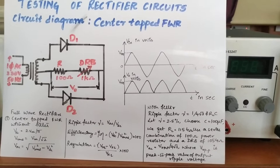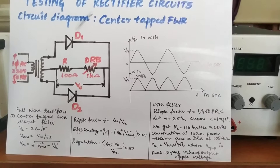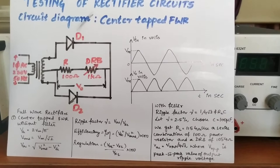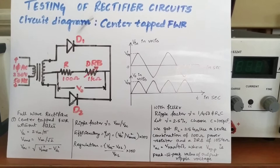Usually the filters will consist of capacitors. The capacitors will be used as a filter so that ripple is removed and almost pure DC will be obtained at the output. The aim of the experiment is the testing of rectifier circuits and to determine ripple factor, regulation, and efficiency for a full wave center tapped rectifier with and without filter, and also for a full wave bridge rectifier with and without filter.